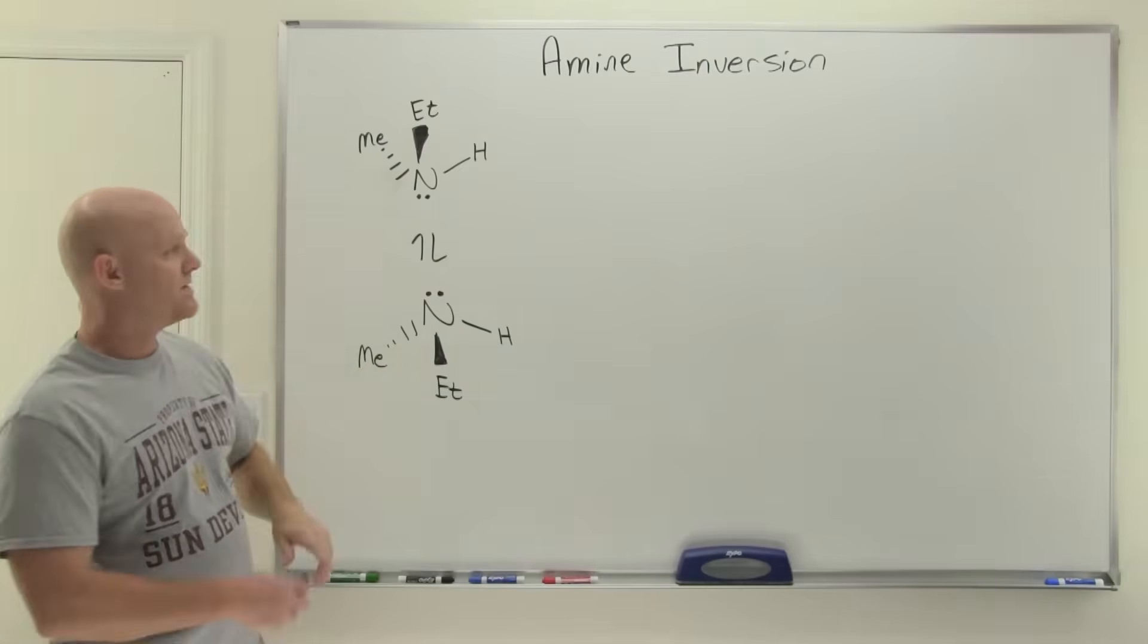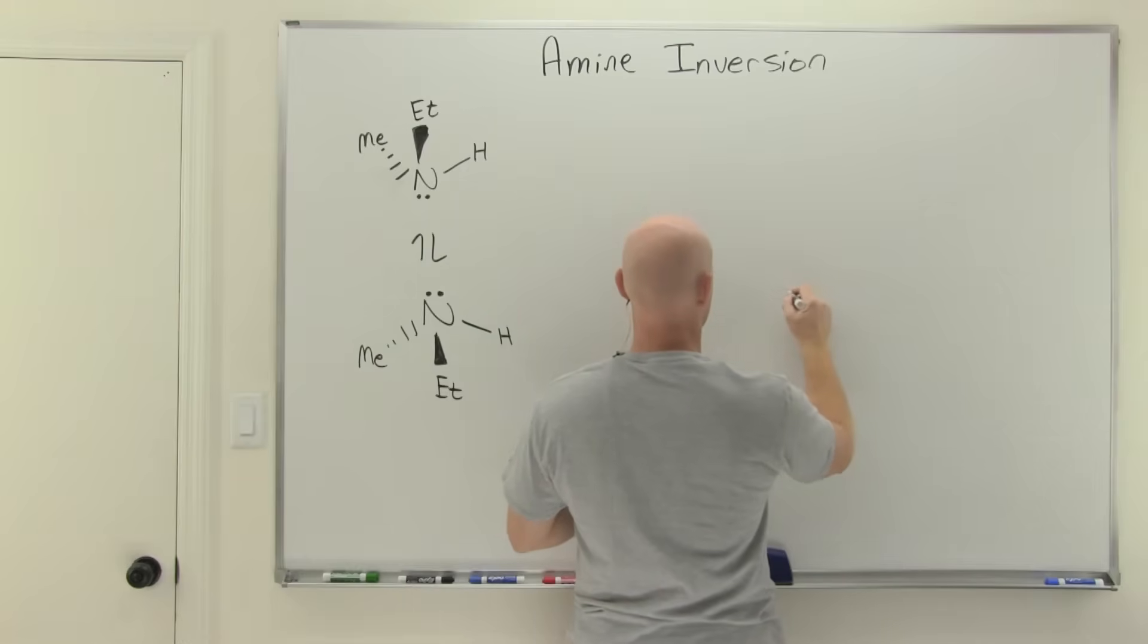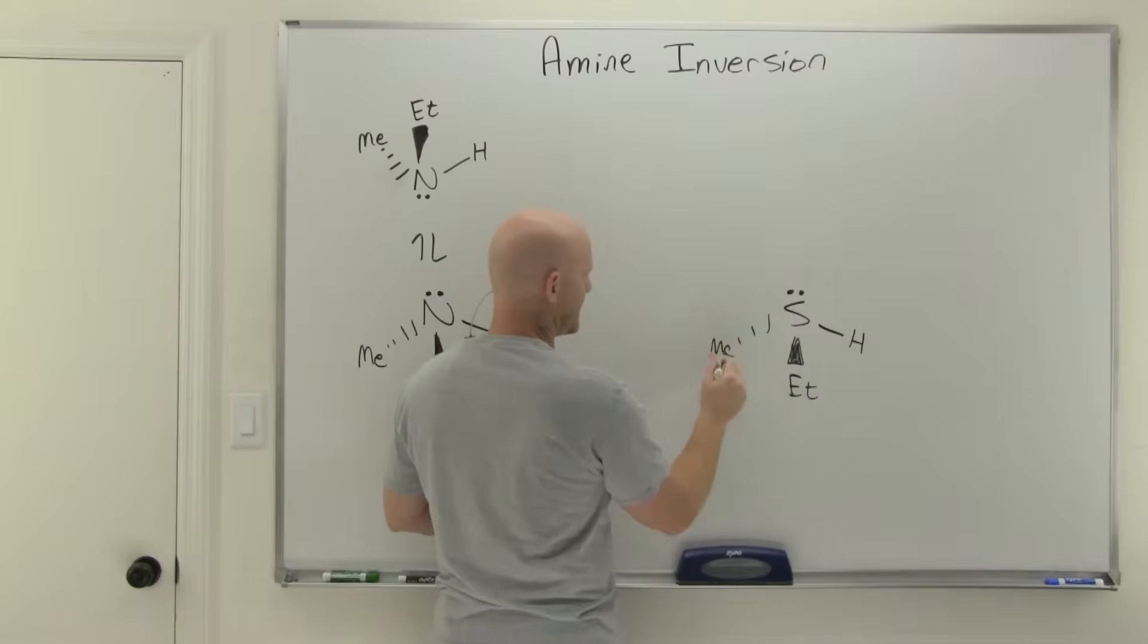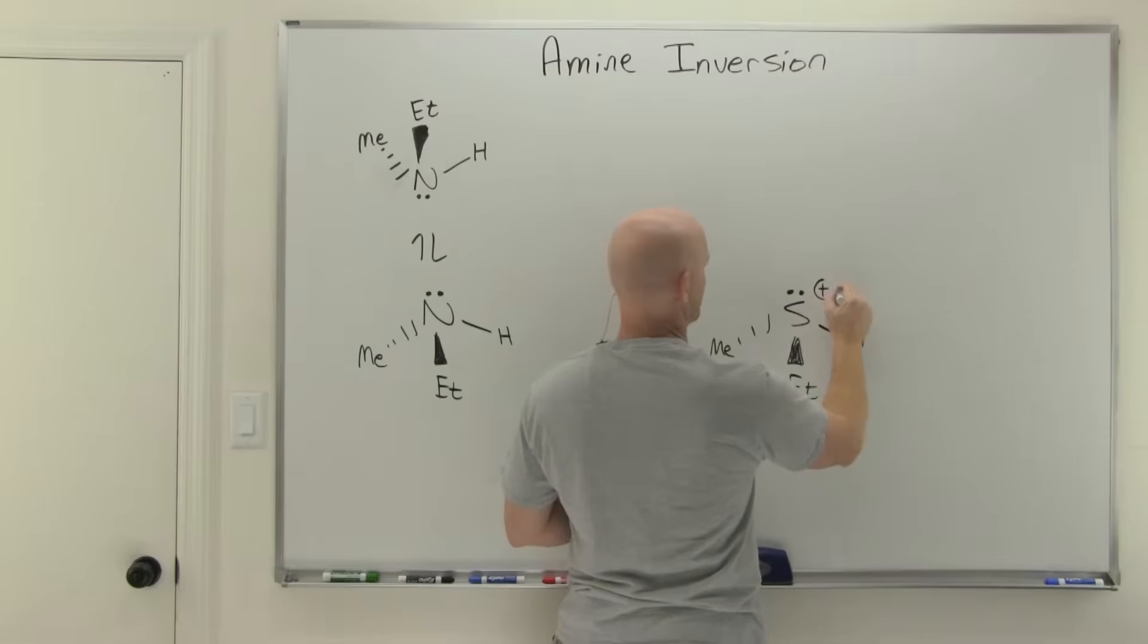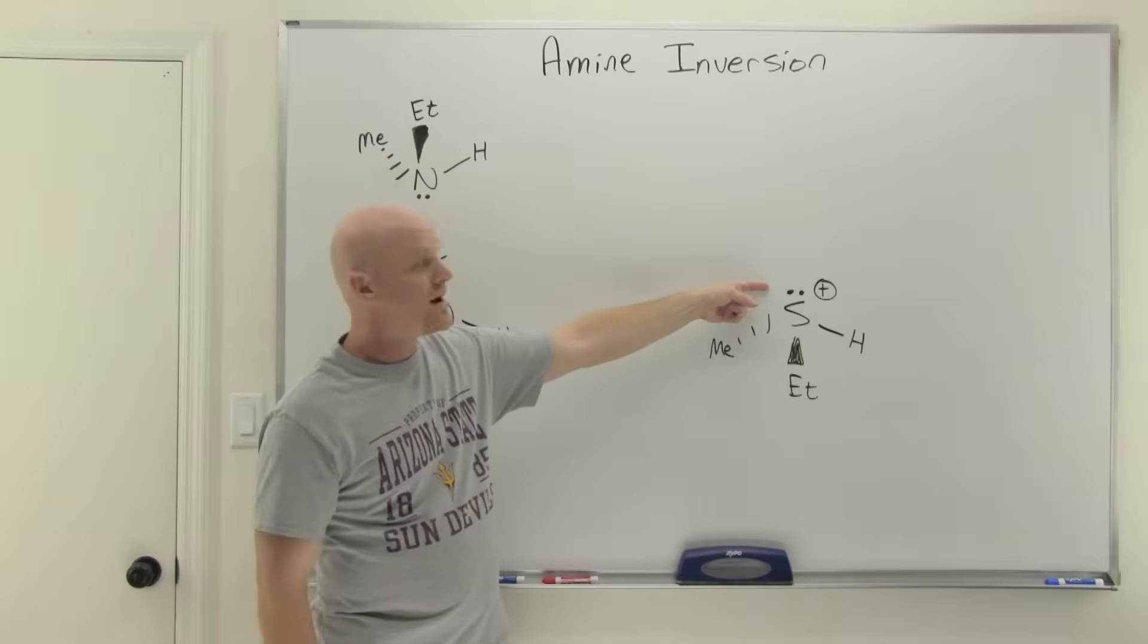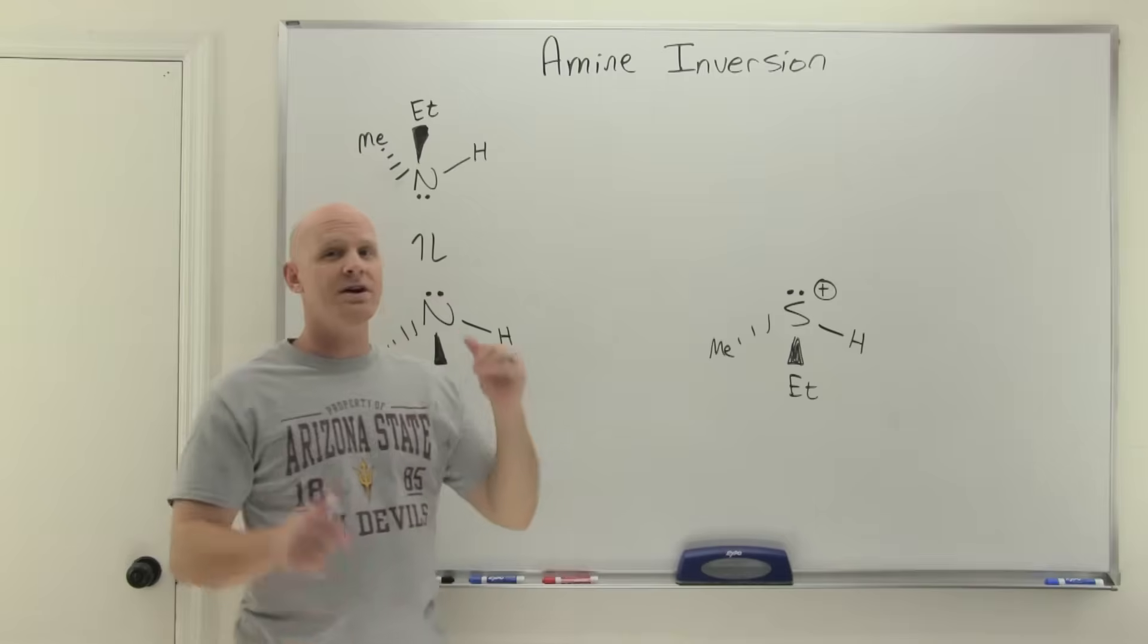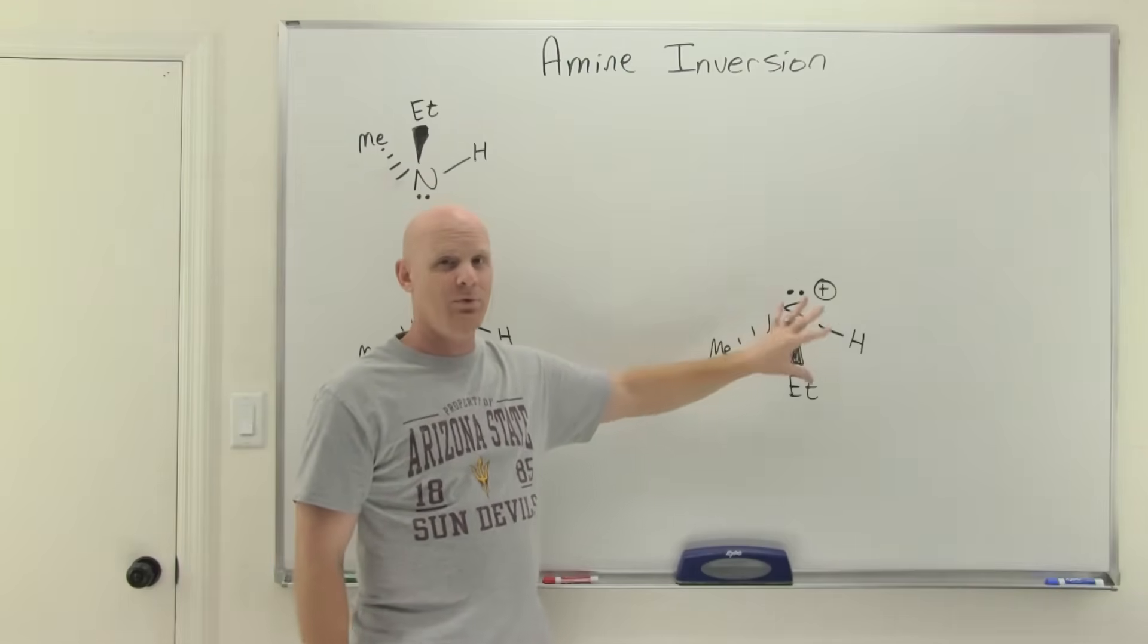But just something to be aware of here. And if you drew the analogous structure with say sulfur here, just to kind of give it some contrast. So we've got an ethyl, a methyl, a hydrogen and a sulfur with a lone pair, and that's going to give it a positive formal charge. So it turns out this kind of inversion here doesn't happen with sulfur. And that lone pair again can be one of the four things. And so if I said, are there any chiral centers in this structure, you should totally say, yep, the sulfur is a chiral center and this molecule is chiral.